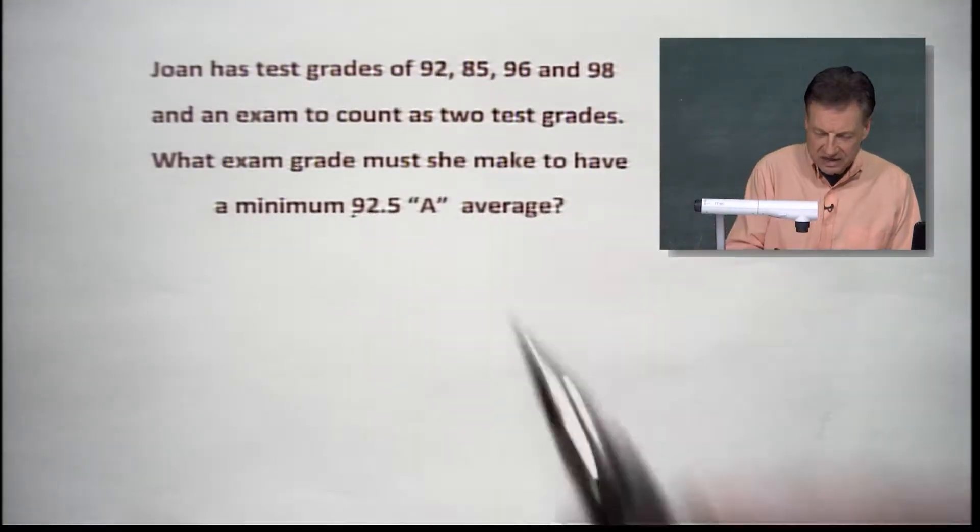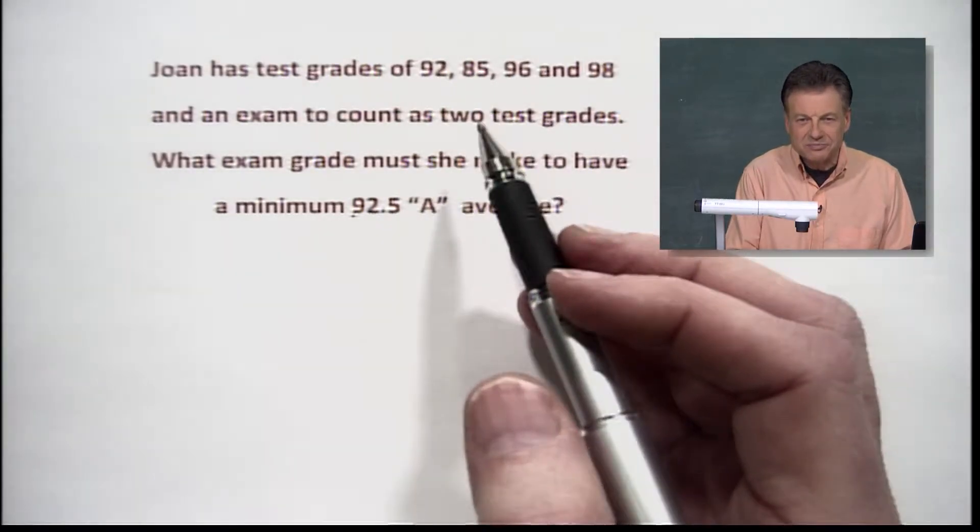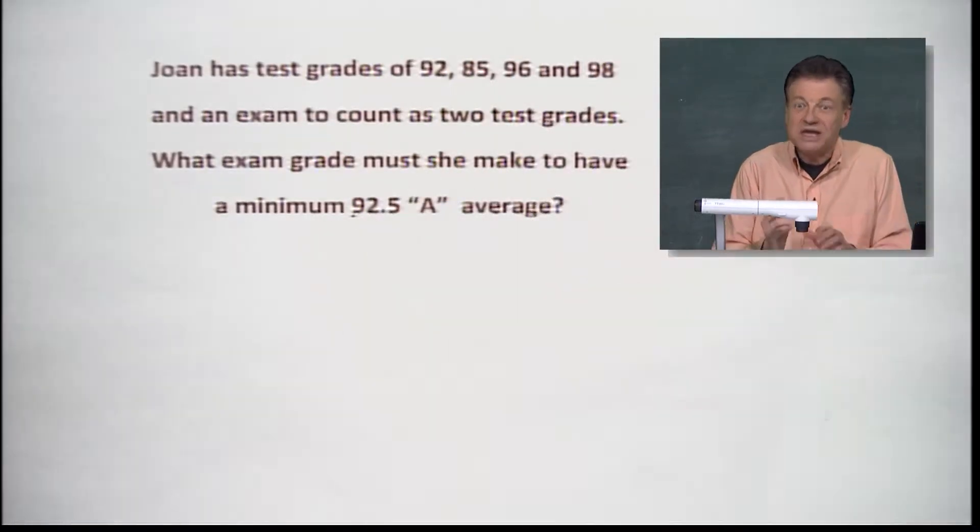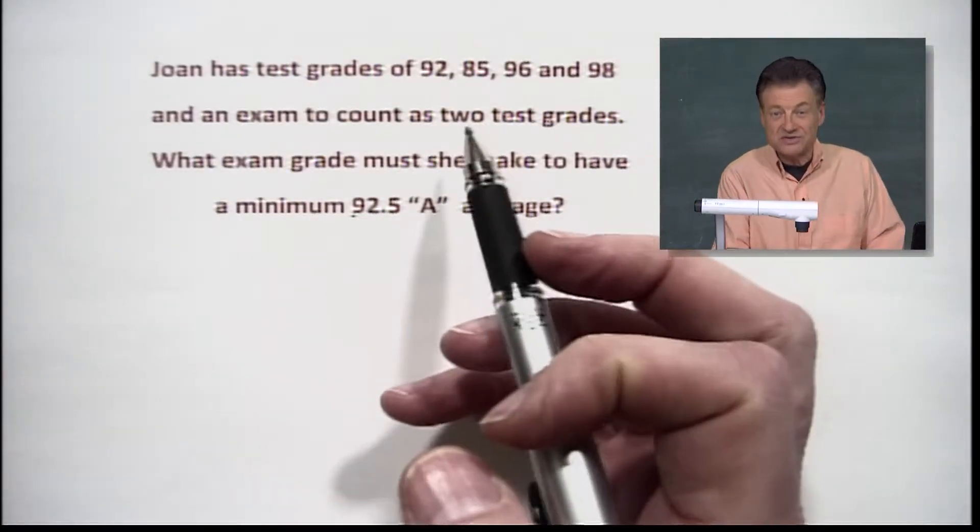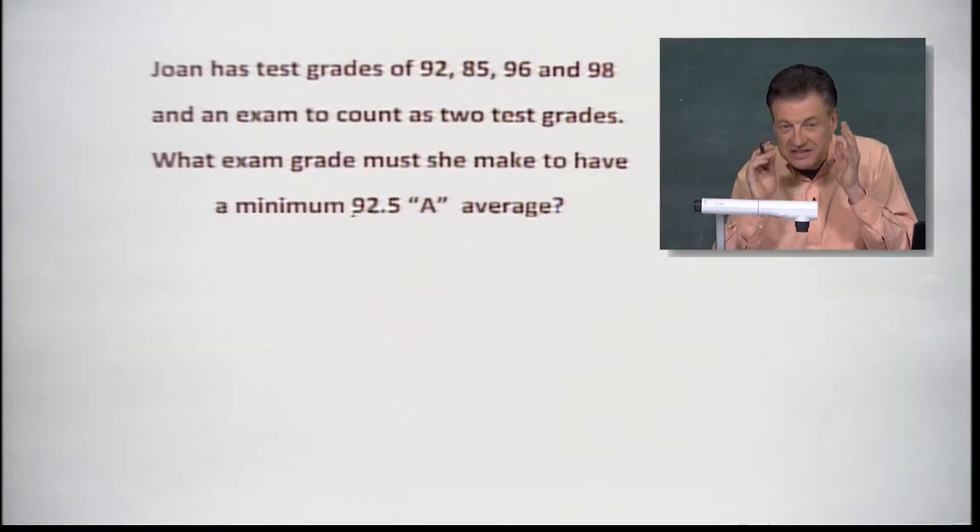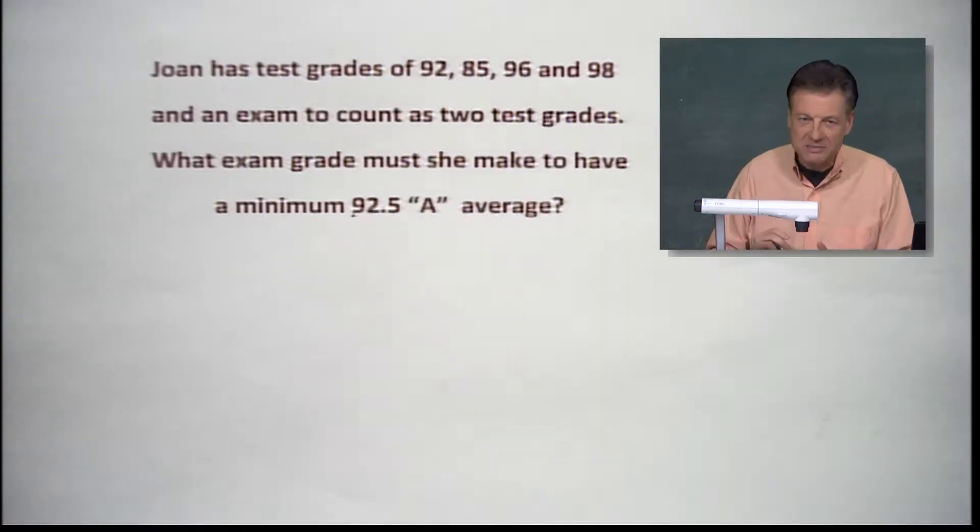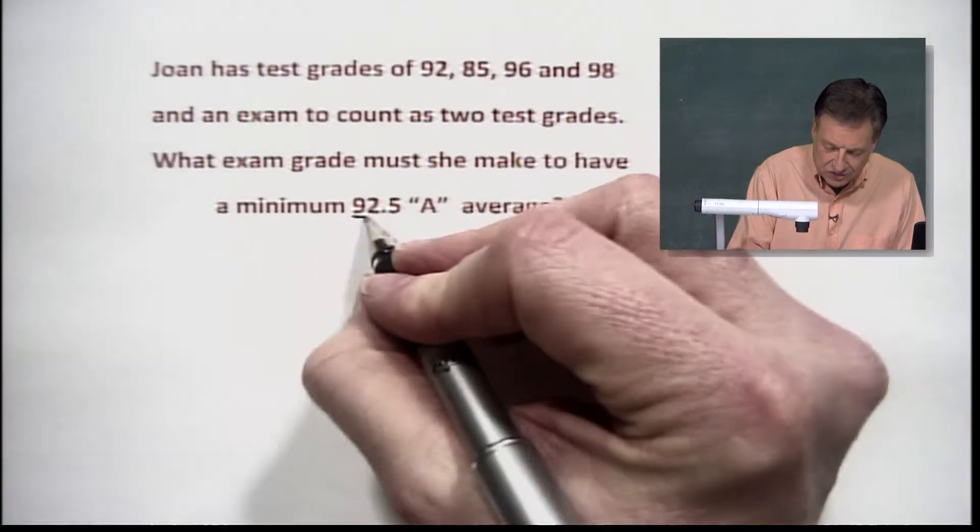when we have these test grades, we're going to add them up and we've got to get an average, which means we're going to not divide by four nor five, but actually it's going to be six when we get these things in there. So we're going to have to think of it in that respect, a little more complicated than it may seem, but we've got to get a 92.5.